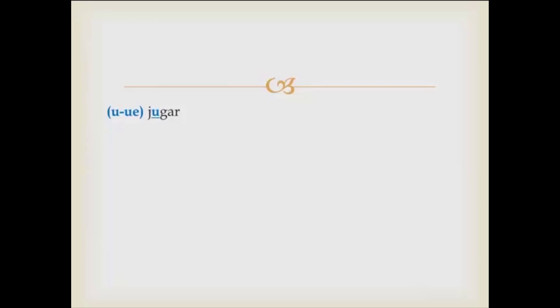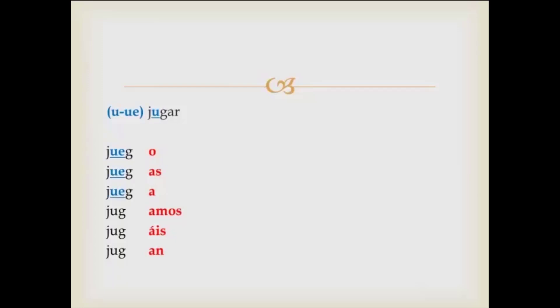Jugar means to play a sport, a card game, a table game, soccer, or football. You can see the ending is a typical AR ending: o, as, a, amos, áis, and an. This is what the verb should look like, but we know it's not regular. Juego — I play. Juegas, juega. Jugamos, jugáis, and juegan, because we know they do not change in the nosotros and vosotros forms. So if you want to say I play football or I play soccer, it's juego fútbol. Juego baloncesto. Juego básquet. Whatever game you're playing, this is your verb. And it's the only one in this category.